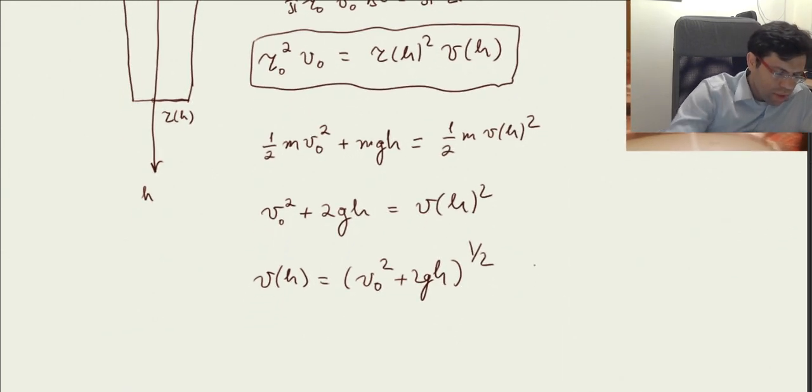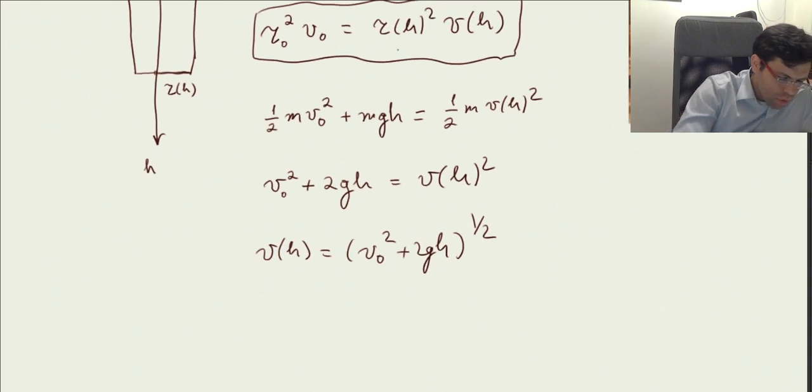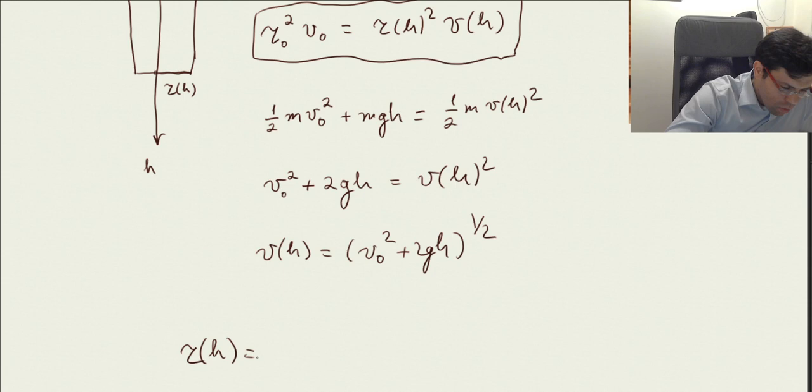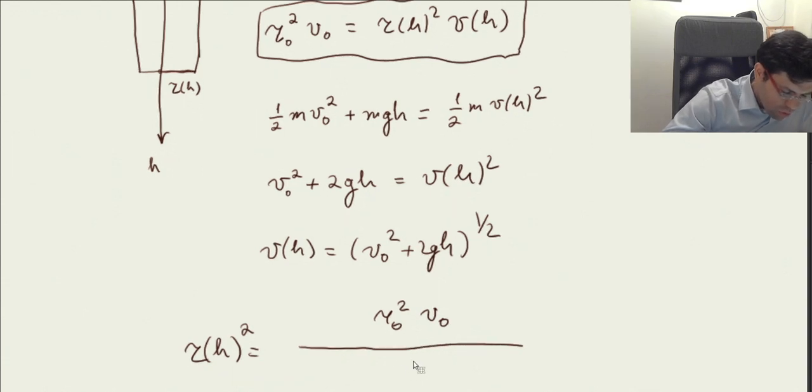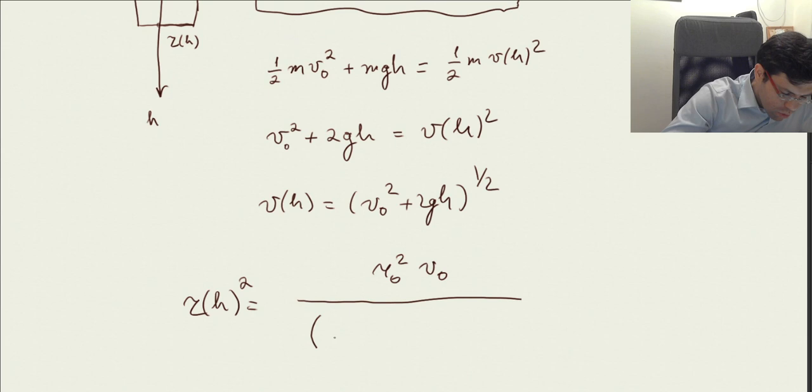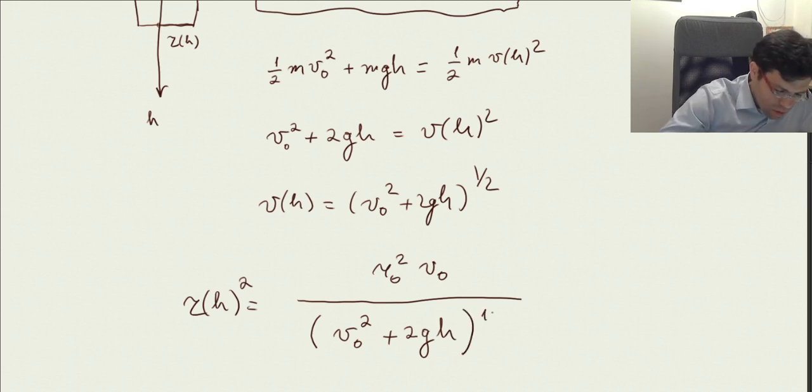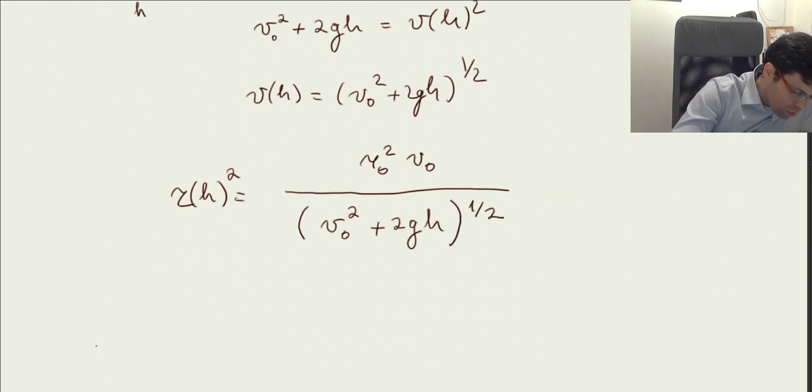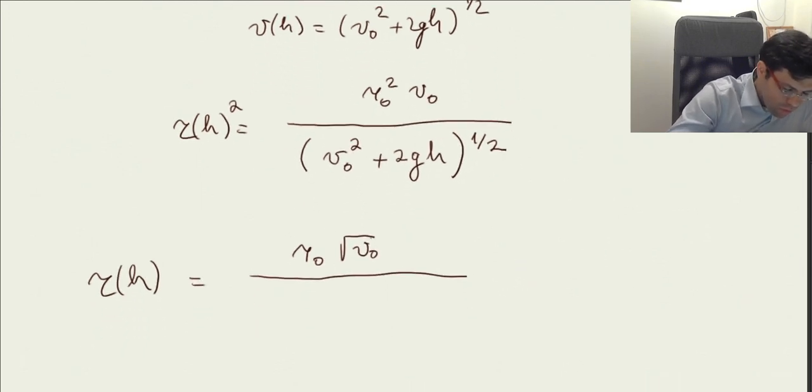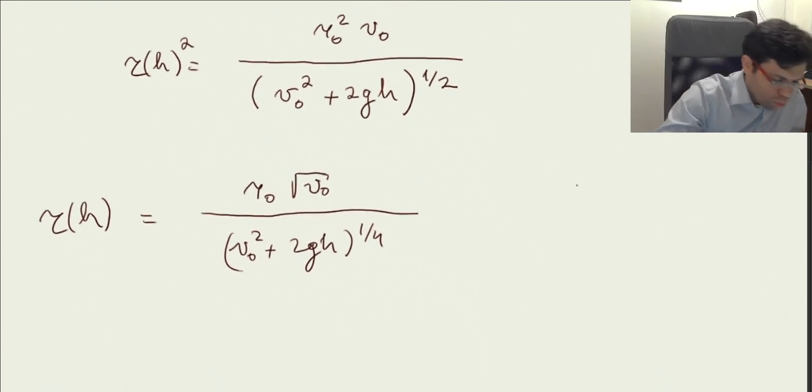When we plug it into this equation, we can find r of h, which is our goal. So r of h squared is going to be r0 squared v0 divided by v0 squared plus twice g h to the power of half. If we take the root, we have the equation for r of h, which is r0 times the square root of v0 over v0 squared plus twice g h to the power of one fourth. If we're talking about parametric equation for the surface, suppose this axis goes up - this is x, y, and z - then we know how r is dependent upon h.